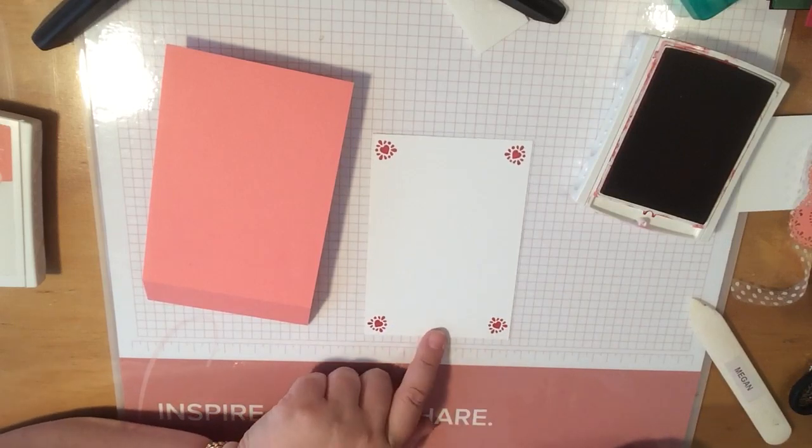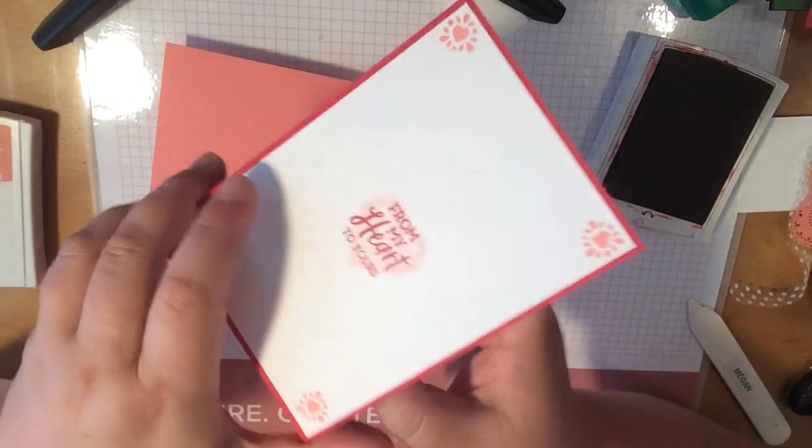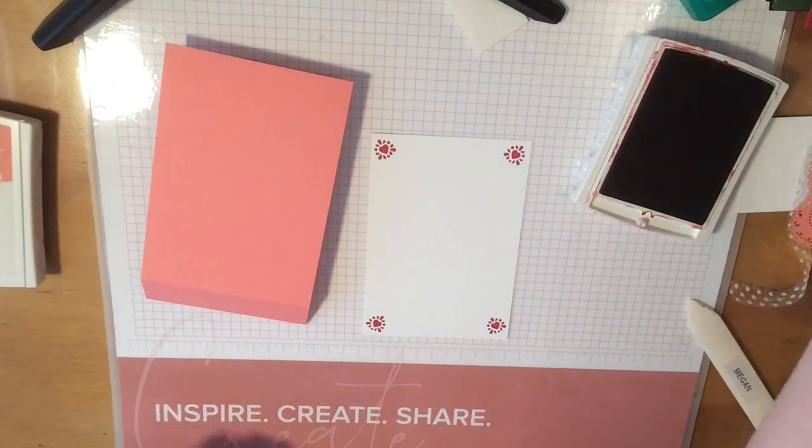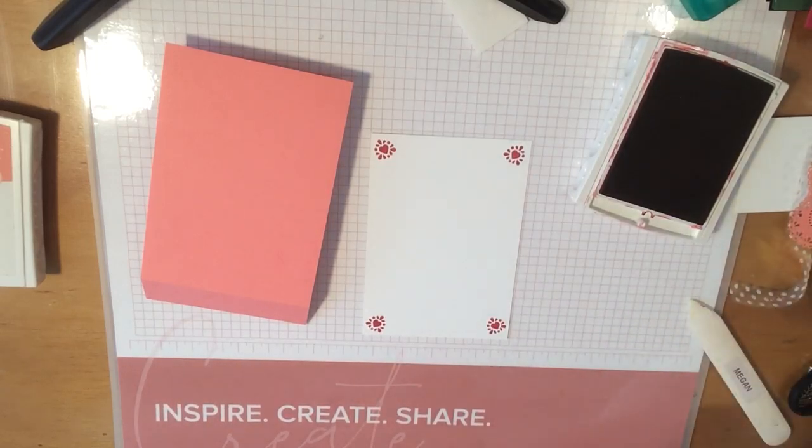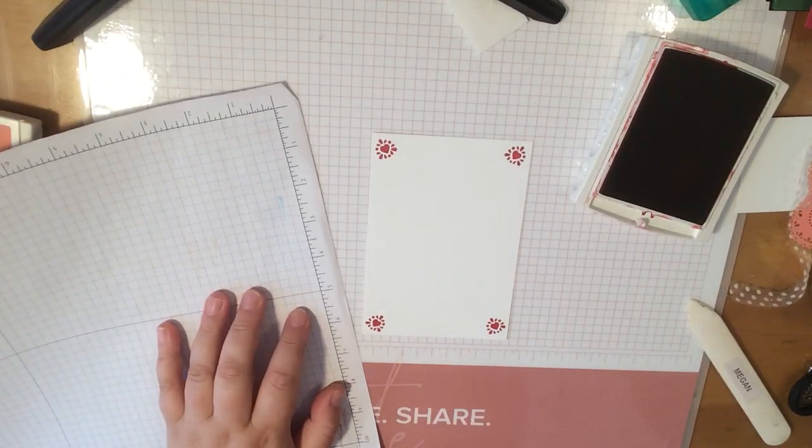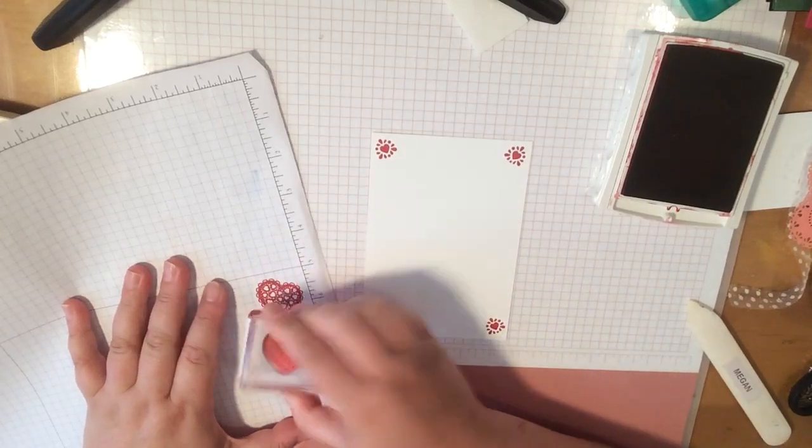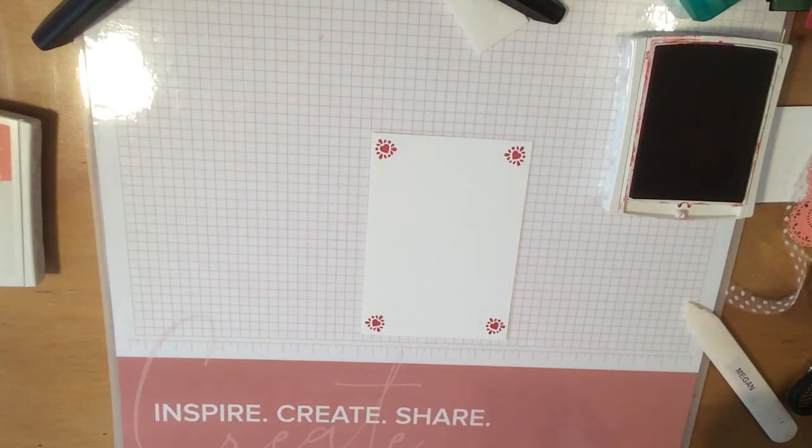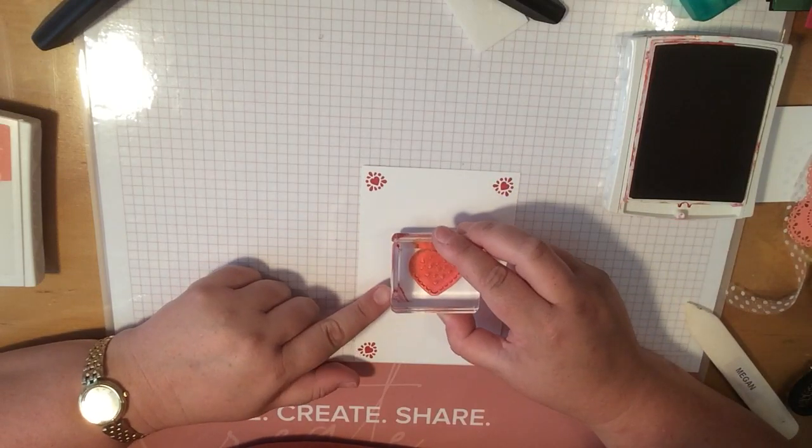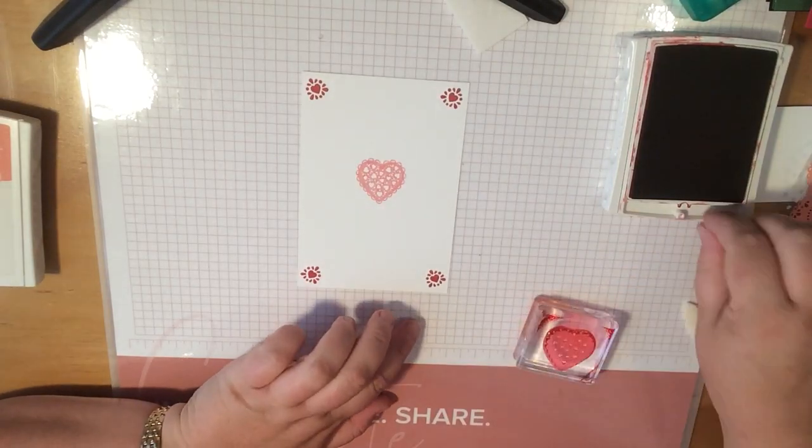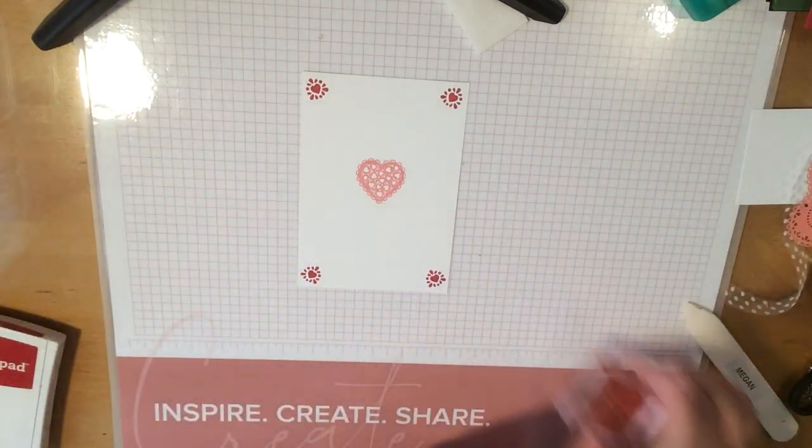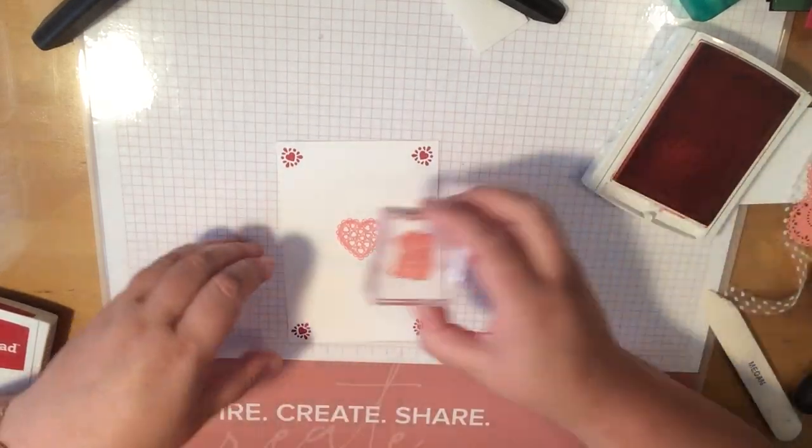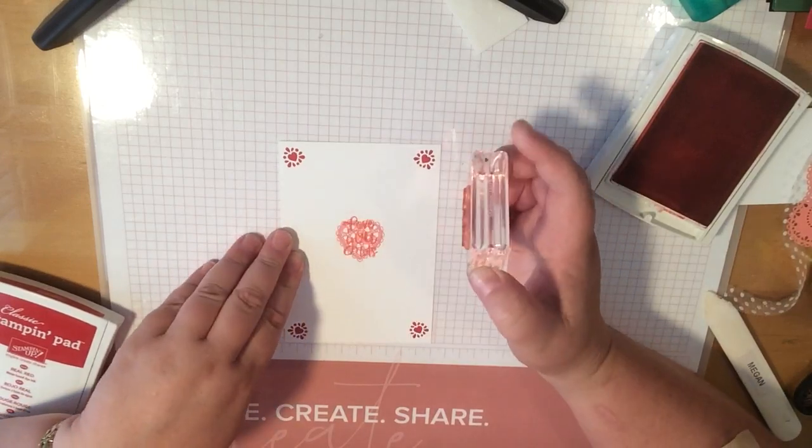So there's the card base done. I'm going to pop that inside. And what we're going to do next is the stamping for the sentiment here and the stamping on the whisper white piece on the back. So I have got for the whisper white on the back, I've got the small heart image. That's going to be in a contrasting colour to my card base. So I've got Flirty Flamingo card base, so I'm going to stamp it in real red. And I'm going to just do that in each of the four corners. It's going to create a bit of interest with the contrast.